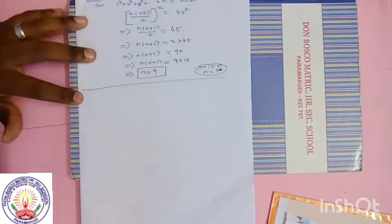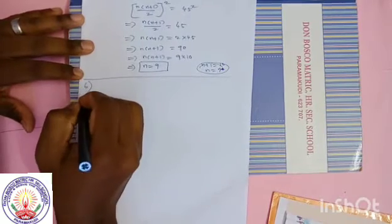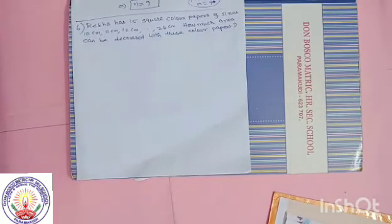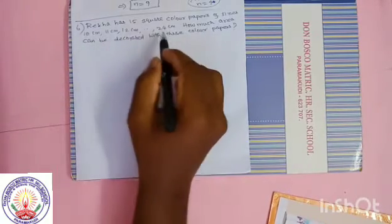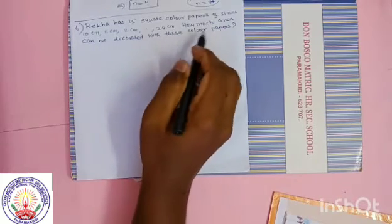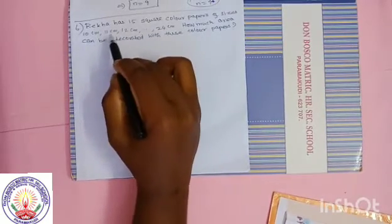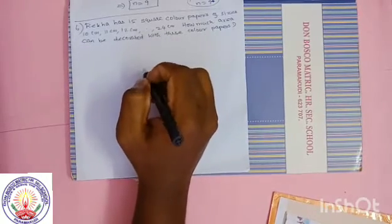Question number 6, exercise 2.9 — it is a very important 5-mark question. Reka has 15 square colour papers of sizes 10 cm, 11 cm, 12 cm, and so on up to 24 cm. How much area can be decorated with these colour papers?